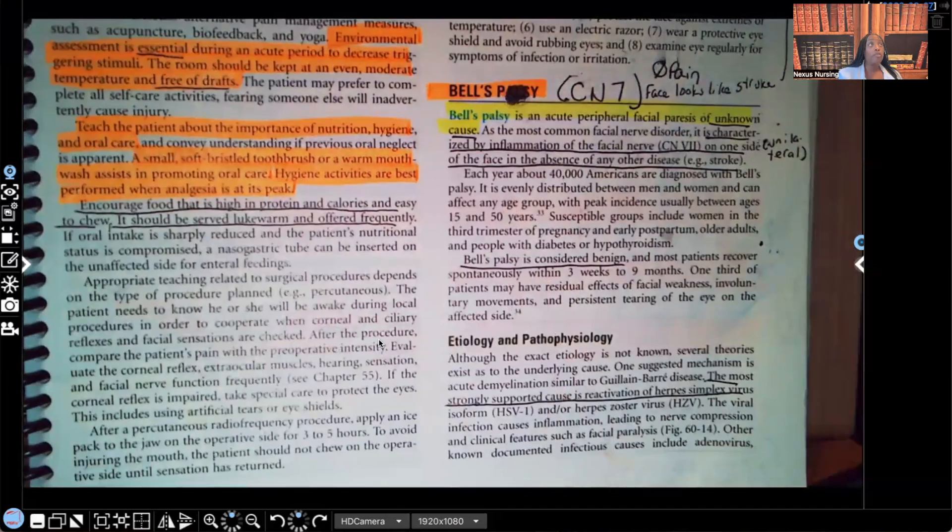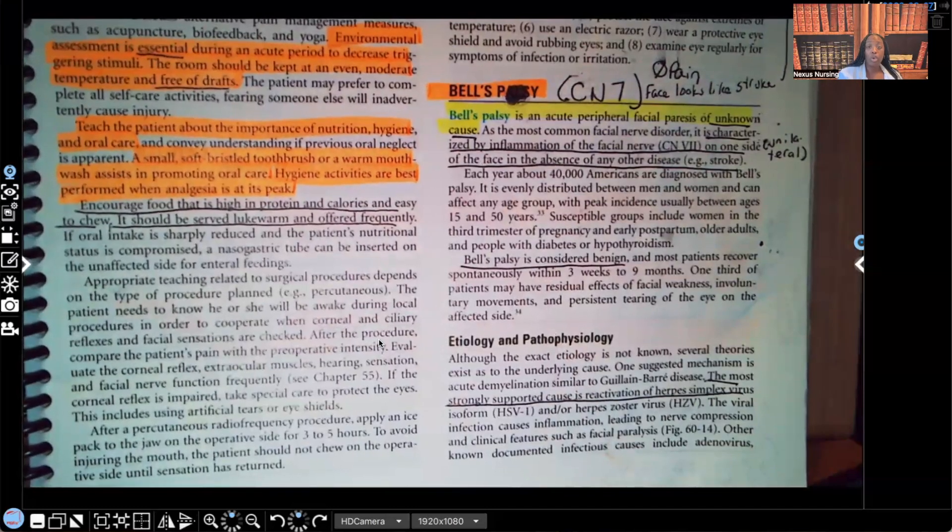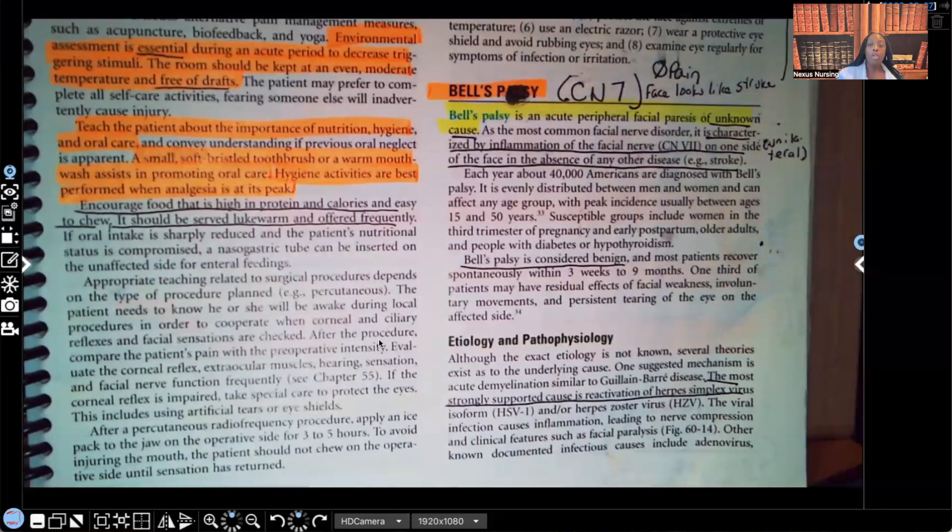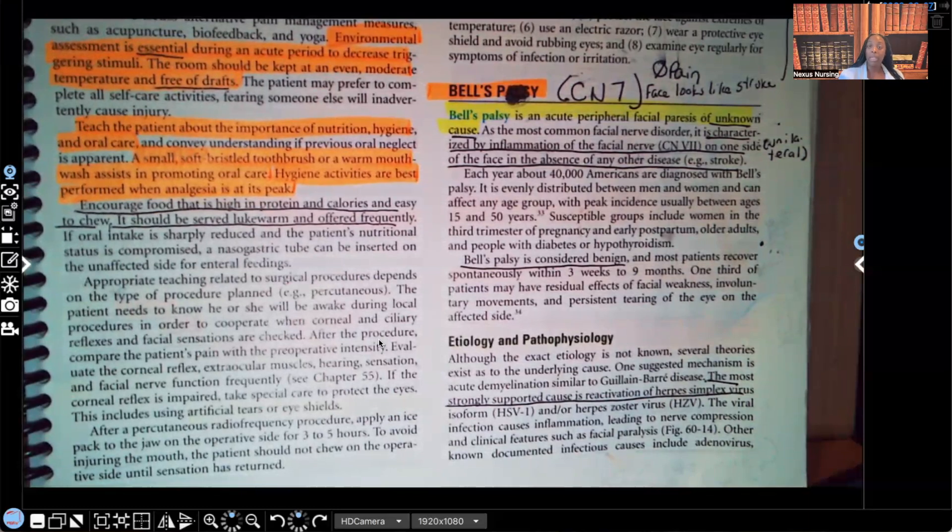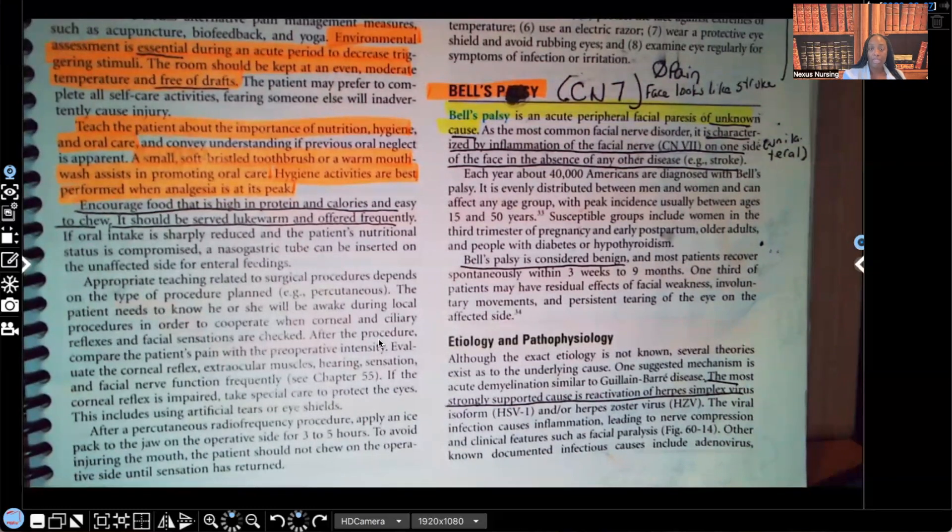Remember I told you, whenever you're studying, if you see a word that you don't understand or you don't know, look it up. So what's happening in Bell's palsy, the patient's having facial paresis. What is paresis? That's like muscle weakness, but the muscle weakness is due to nerves. Something's wrong with the nerves. It's a nerve that's causing the muscle weakness. So Bell's palsy is an acute peripheral facial weakness, facial paresis, that weakness caused by a nerve of unknown cause.